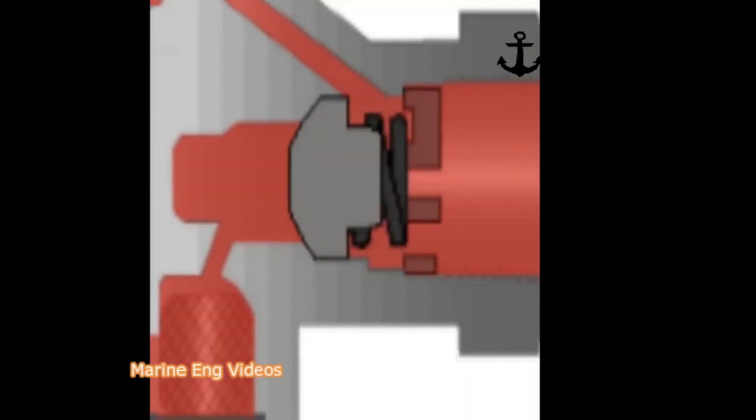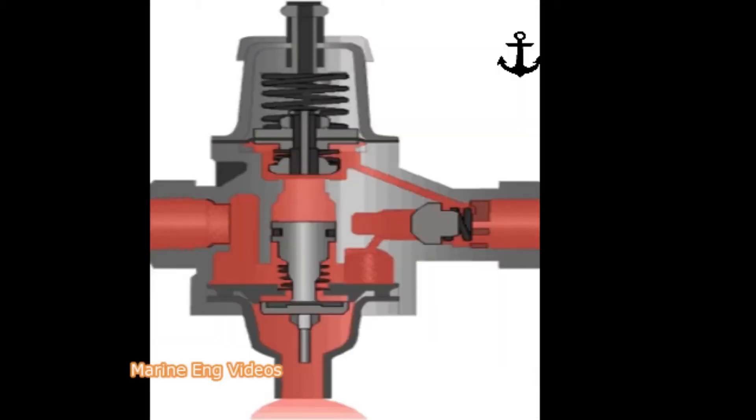The non-return valve closes and prevents backflow of air from the reservoir. When the air pressure in the reservoir drops due to brake application or other usage of air, the pressure below the diaphragm also drops.